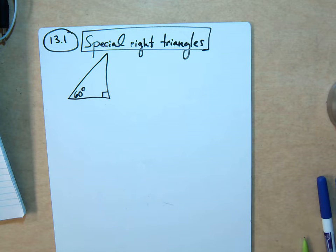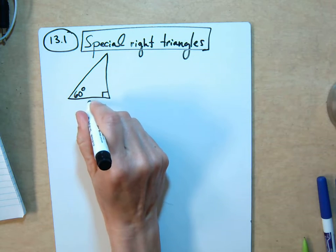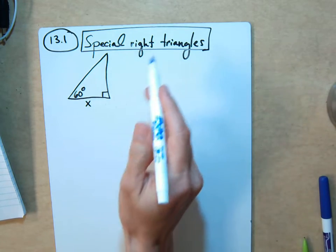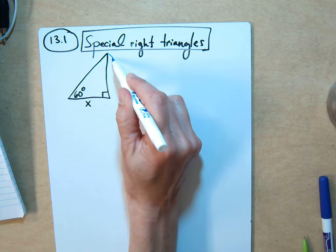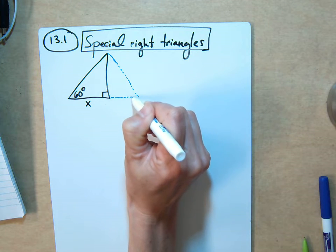And let's say this is an unknown side x. Okay, so the reason there's a special relationship is because of this, so that you don't have to memorize it. If you can redo what I'm about to do, this is kind of like the proof of the 30, 60, 90. All you would do is duplicate this on the other side, like this.